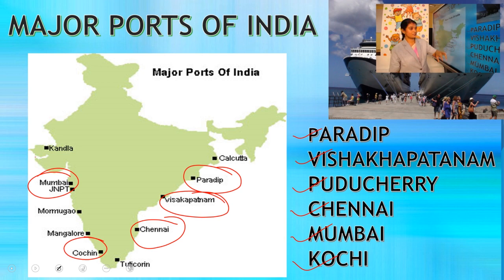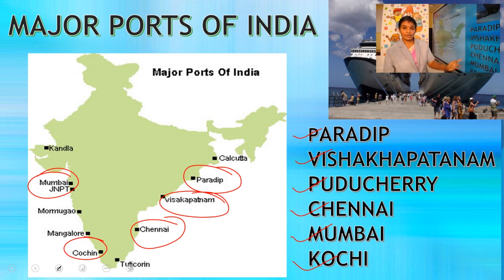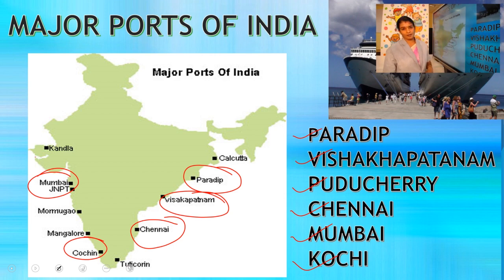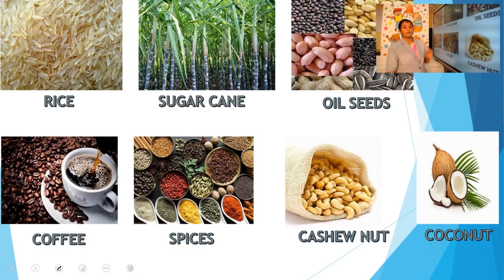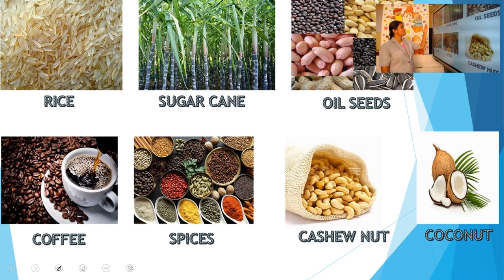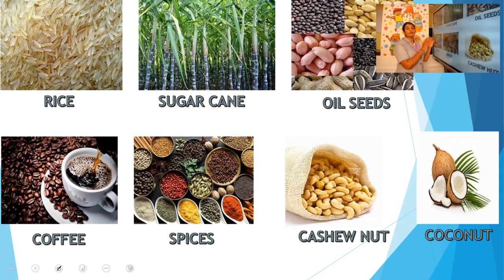Some important ports of India are Paradeep, Visakhapatnam, Puducherry, Chennai, Mumbai, and Kochi. The climatic conditions and soil of coastal plains are very good for cultivating some food items. For example, rice, sugarcane, oil seed, coffee, spices, cashew nut, and coconut are grown here very well.